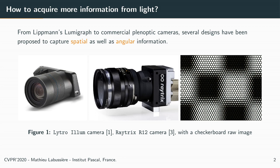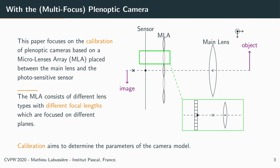This paper focuses on the calibration of plenoptic cameras based on a micro-lens array placed between a main lens and a sensor, as illustrated by the figure on the right. Especially, we are interested in the multi-focus configuration of such a camera, where the MLA is composed of multiple lens types, each with a different focal length.